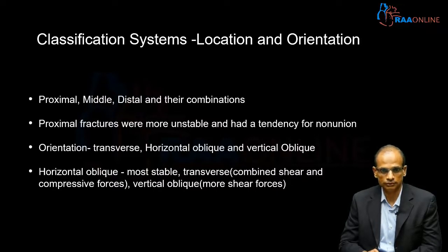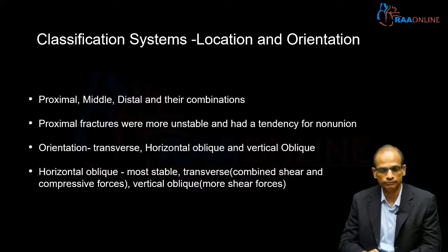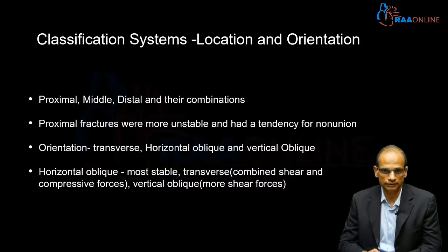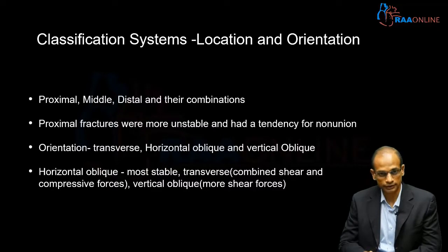Classification can also be based on orientation of the fracture line. The fracture can be transverse, horizontal oblique, or vertical oblique — which is the basis for the Roussi classification. Horizontal fractures are the most stable. Transverse fractures involve combined shear and compressive forces. Vertical oblique fractures are the most unstable and problematic because of the predominant shearing component of force involved.